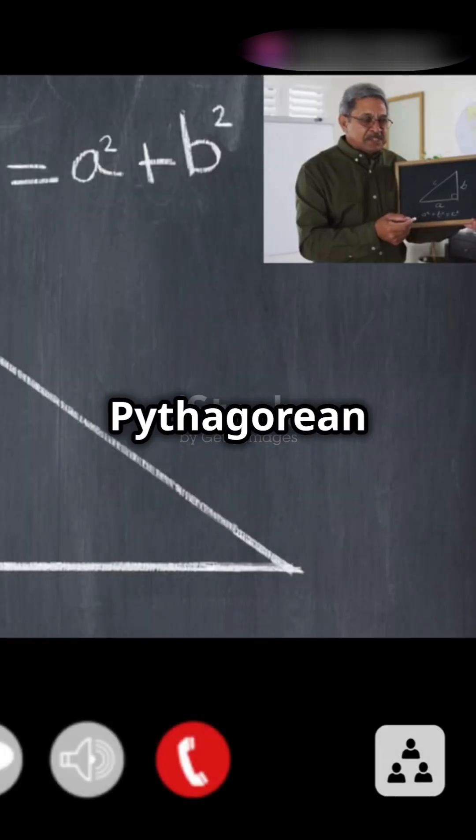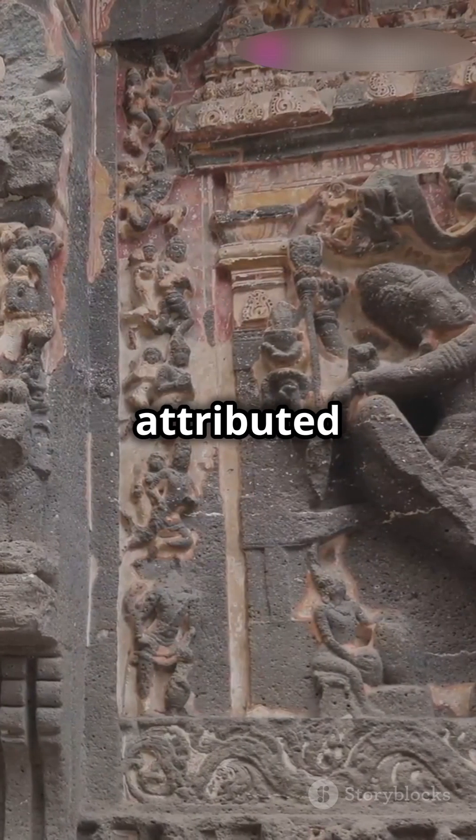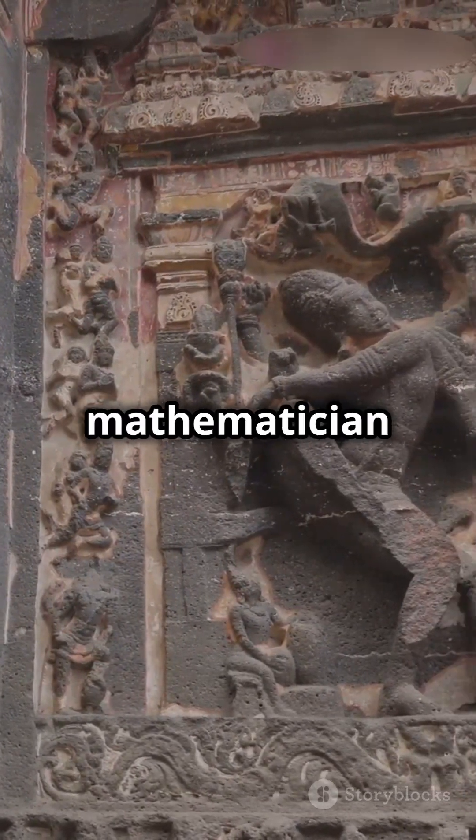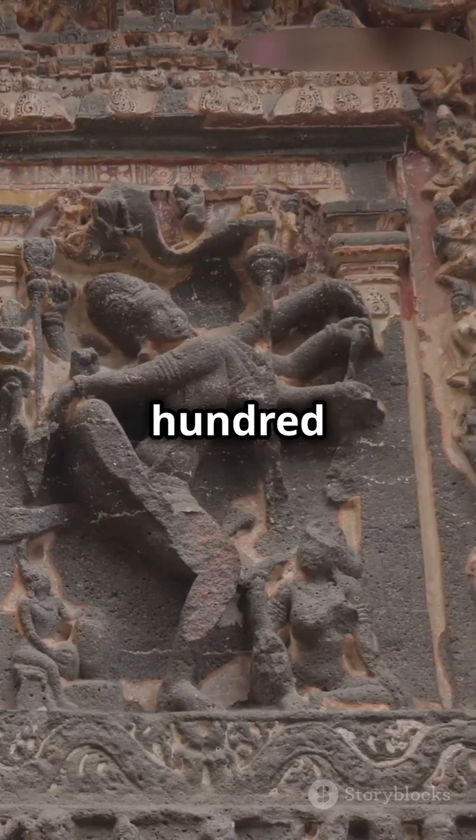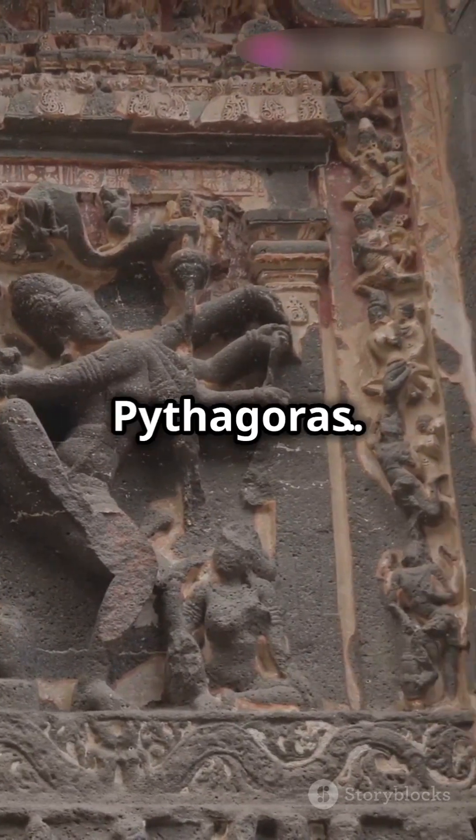Consider the famous Pythagorean theorem. While attributed to Pythagoras, Indian mathematician Baudhayana documented this principle in his Sulbasutras around 800 BCE, long before Pythagoras.